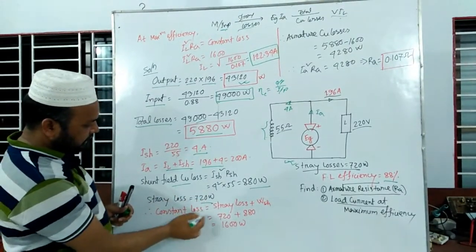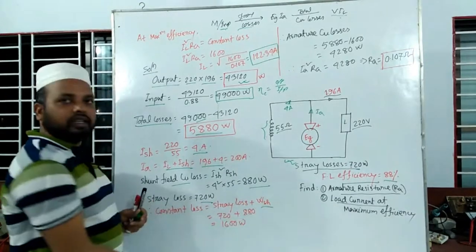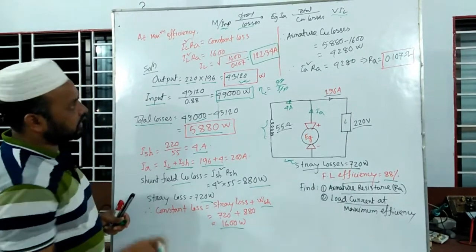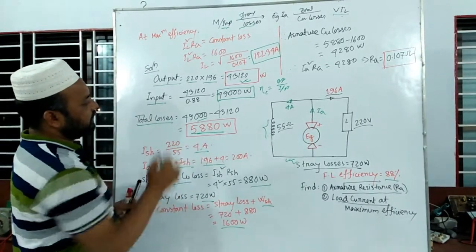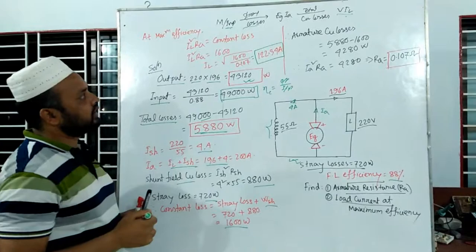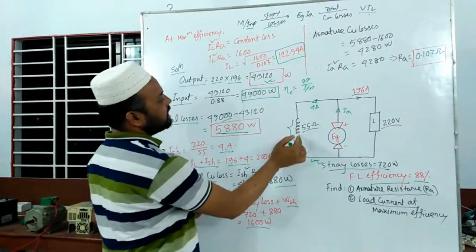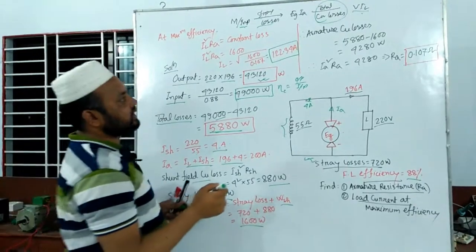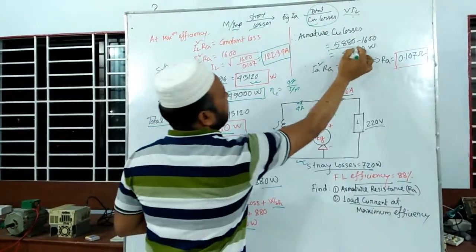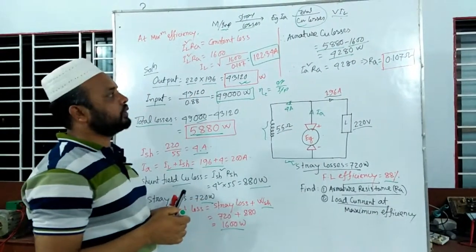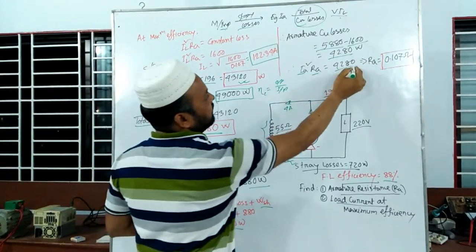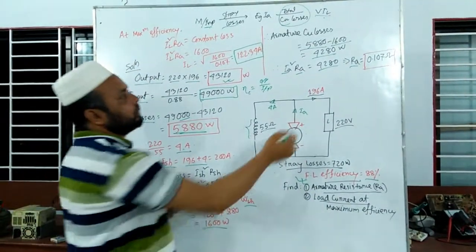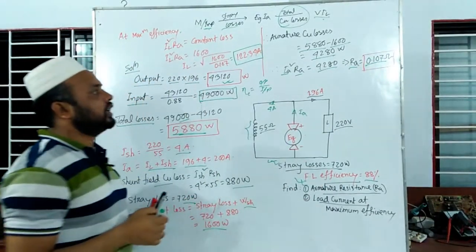What is the constant loss? The total loss is 5880. The total loss includes the constant loss plus the copper loss, which is the armature copper loss (IA² × Ra). Ra is equal to Ra, so ZS_a is equal to Ra. R_a is equal to 0.07.